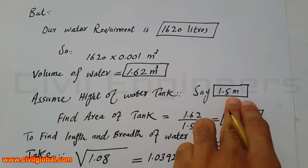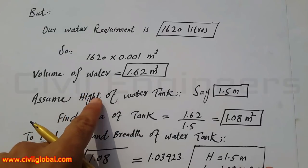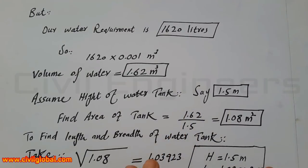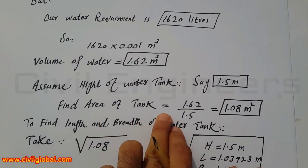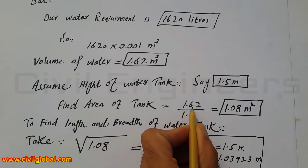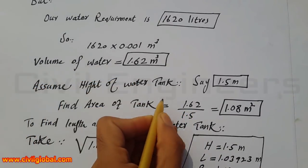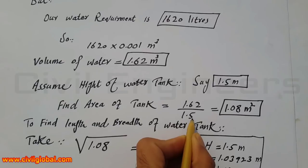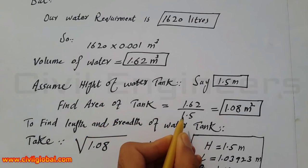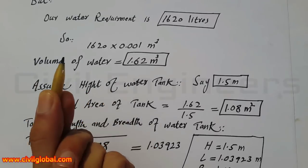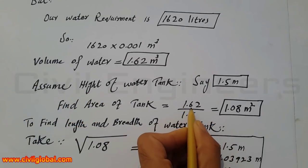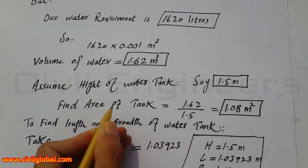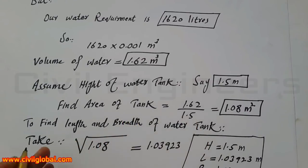Now, assume the height of the water tank is 1.5 meters for a 12-member family. To find the area of the tank: Area = Volume ÷ Height = 1.62 ÷ 1.5 = 1.08 meter square. This is the area of the water tank.